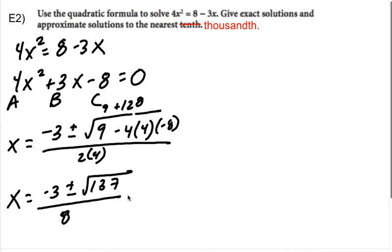Now, 137 doesn't simplify at all. Walking through: 137 is not divisible by 2 (not even), not by 3 (digits don't sum to a multiple of 3), not by 5 (doesn't end in 0 or 5), not by 7, not by 11 (11² = 121). Since we've gone past halfway — 12² is slightly larger than 137 — there are no factors. So (-3 ± √137)/8 is the exact answer.